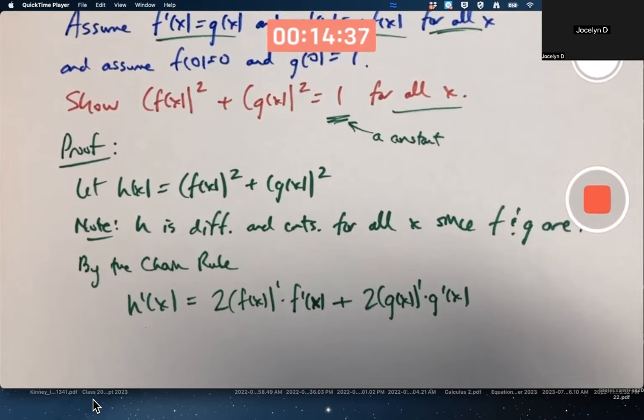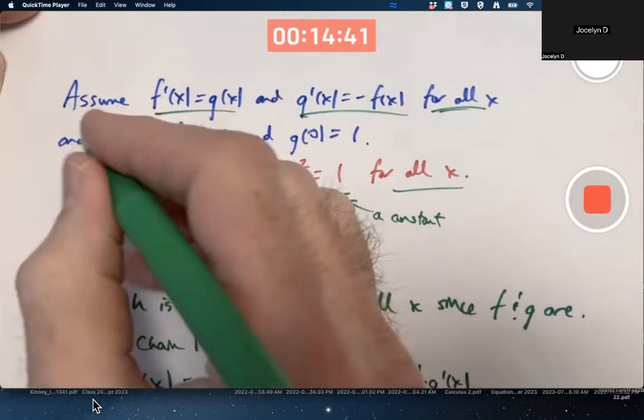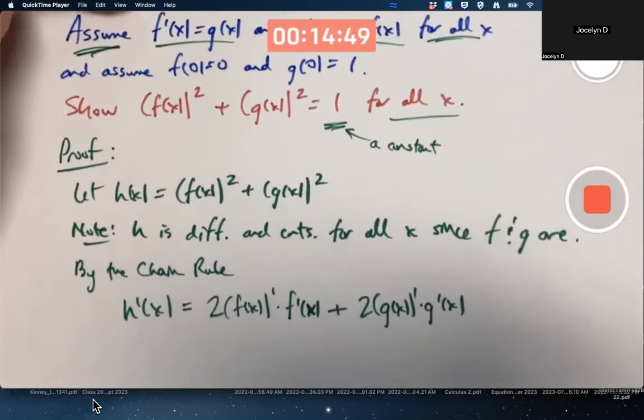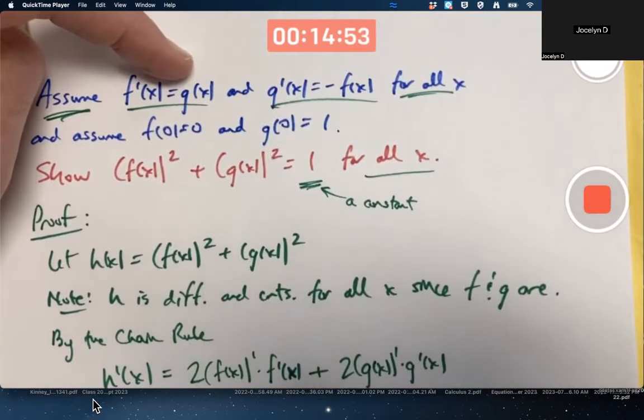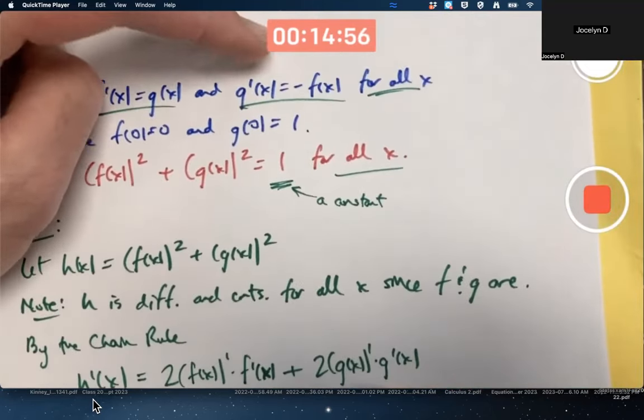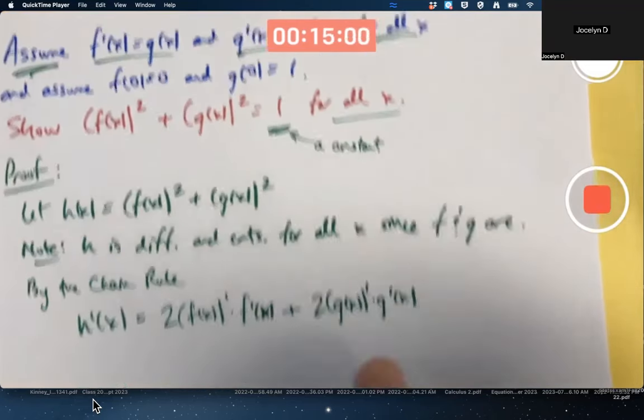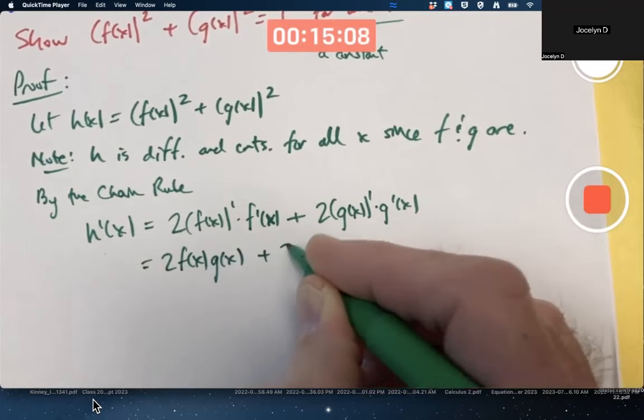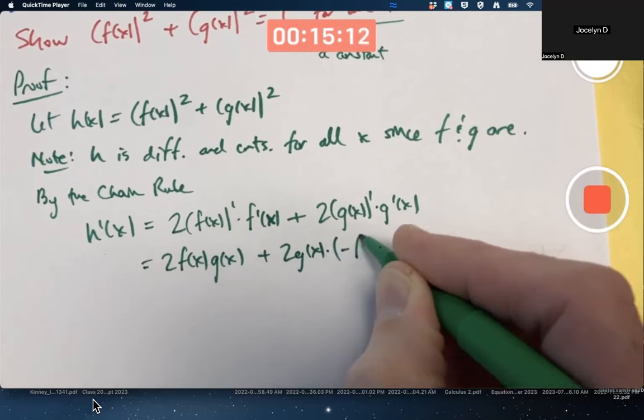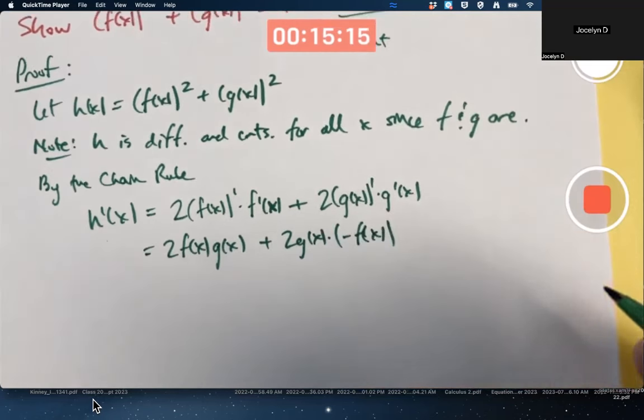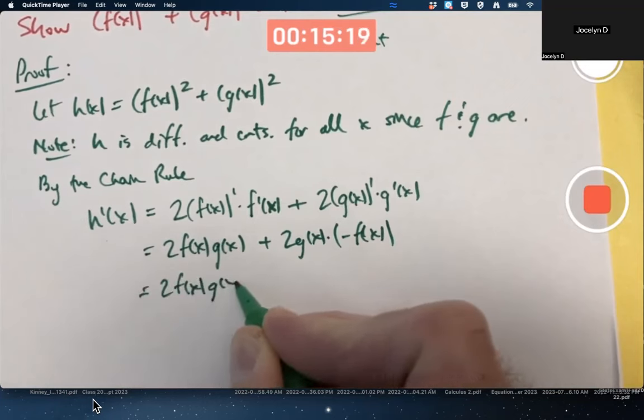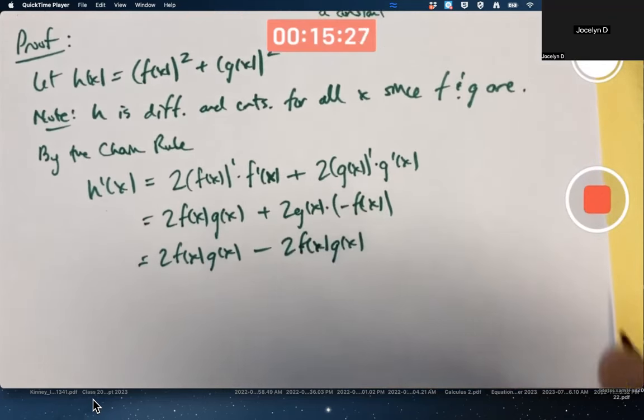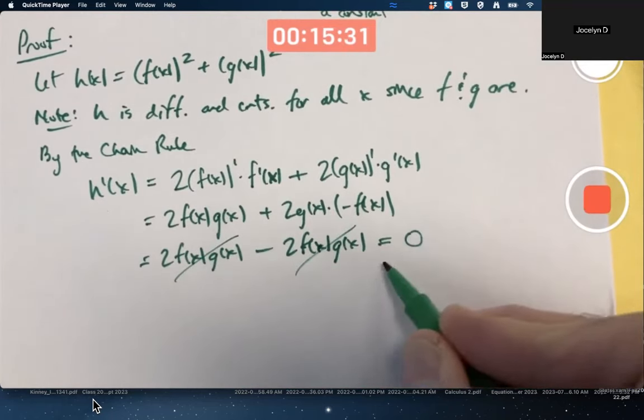Anytime you do a proof in a math class, you need to use your assumptions in some way, otherwise why would you be assuming them? So we've got to use these things. Oh, okay, I guess I could replace f prime of x with g of x and g prime of x with negative f of x. Yeah, go ahead and do so, I'm assuming that's true. Replace f prime of x with g of x, replace g prime of x with negative f of x. Bring that negative sign in the second term to the front as a subtraction. Use the commutative property of multiplication to switch the f and the g around, and then we see we've got two things that are the same being subtracted. This is zero for all x.